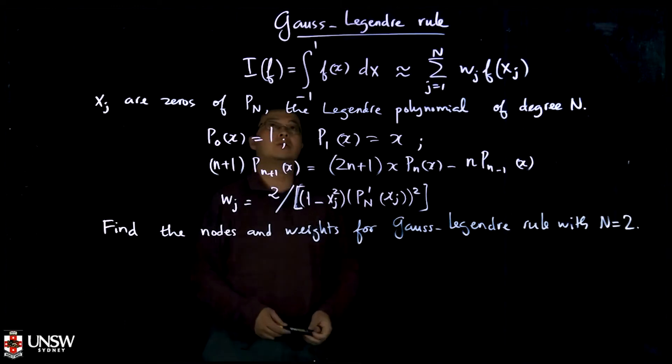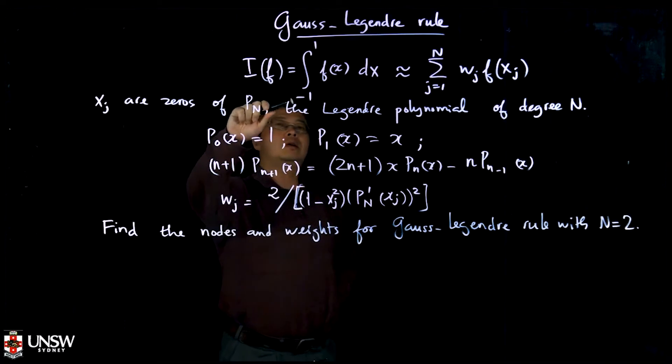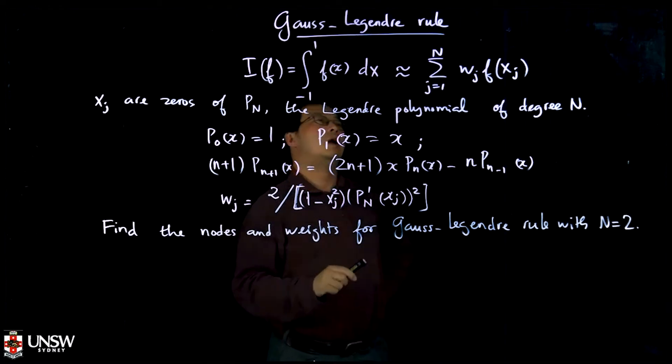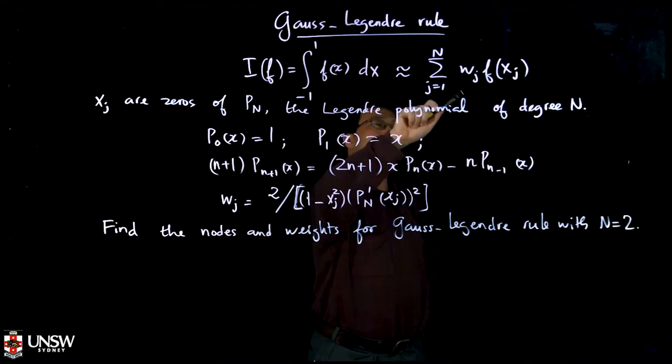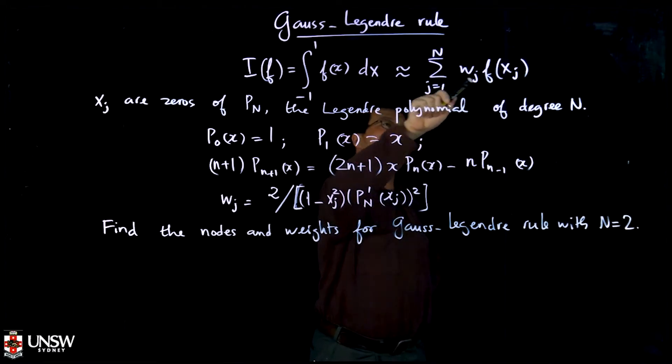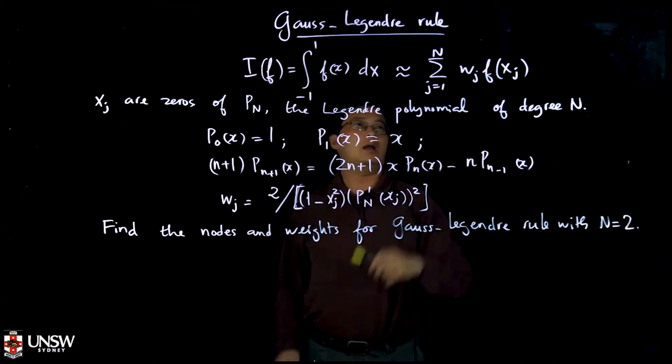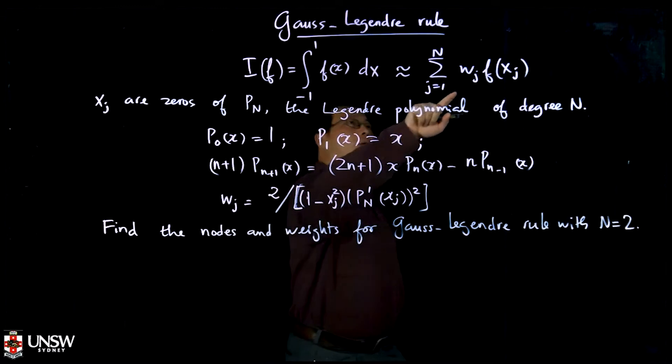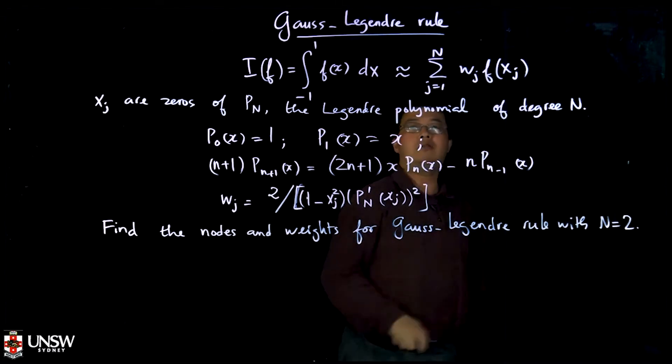Okay, so we are going to talk about Gauss-Legendre rules. Gauss-Legendre rules is a way to approximate the integral from minus one to one of the function f. You can see that different from rectangular rules or Simpson rules, now the points are not equally spaced, and the weights don't depend on the width of the intervals anymore. Now the weight and the quadrature points are given by the following formulas.